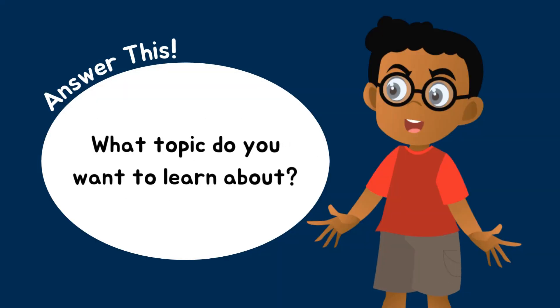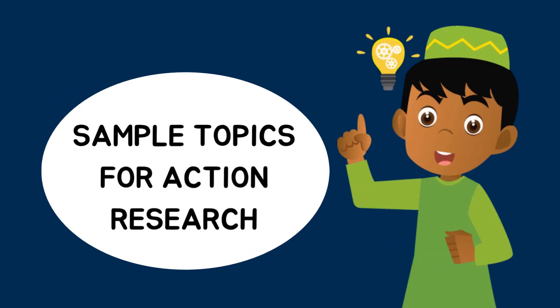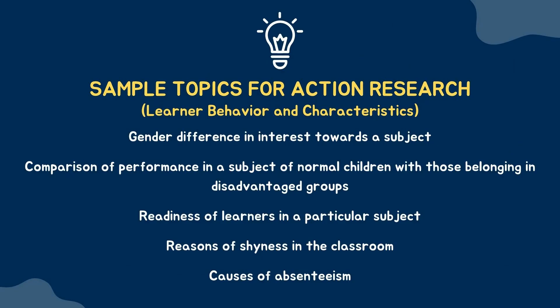If you don't have a topic in mind yet, here are some sample topics for action research. For learning behavior and characteristics: gender difference in interest towards a subject; comparison of performance in a subject of normal children with those belonging in disadvantaged groups; and readiness of learners in a particular subject.